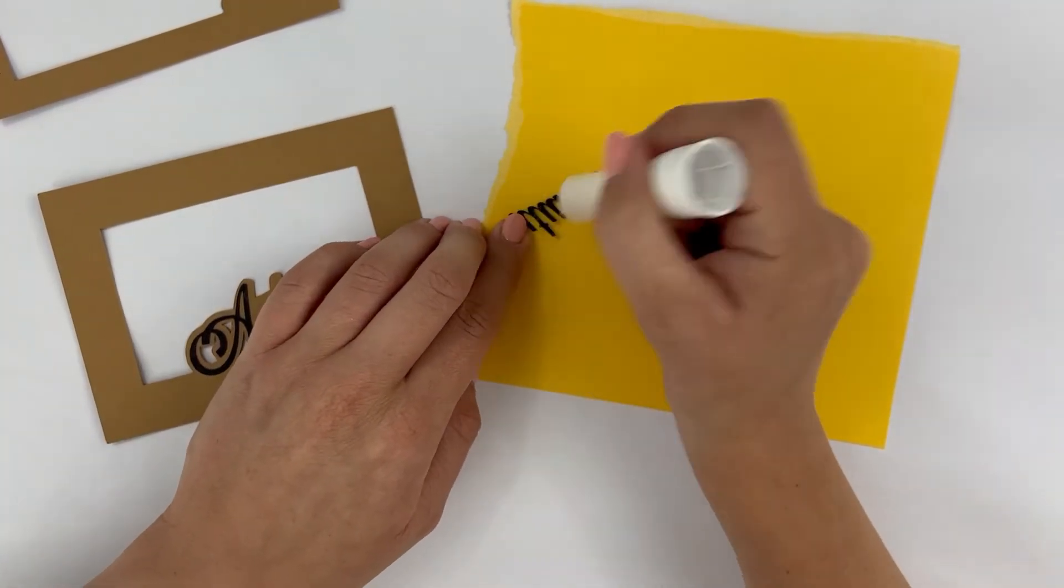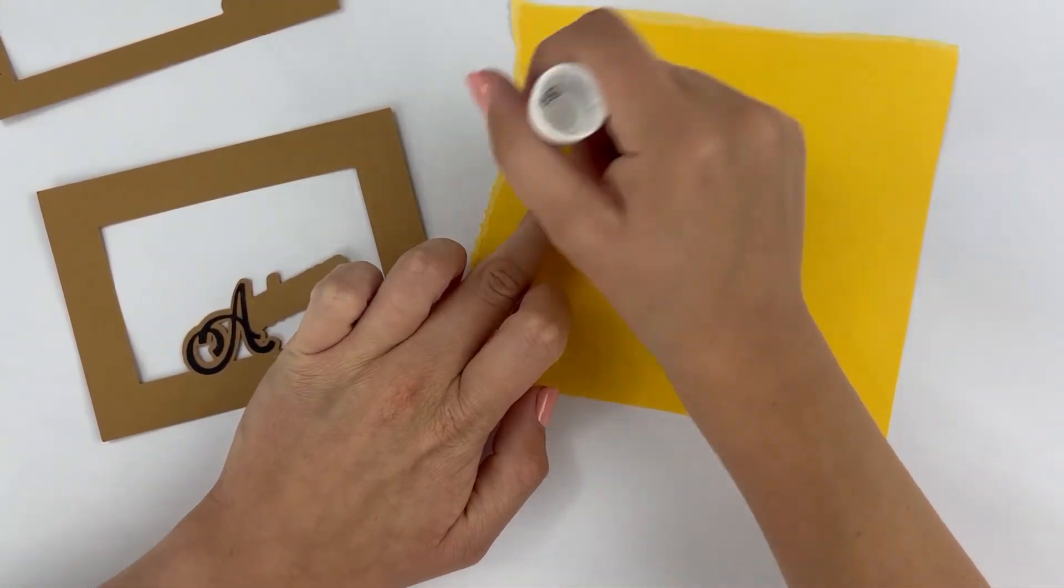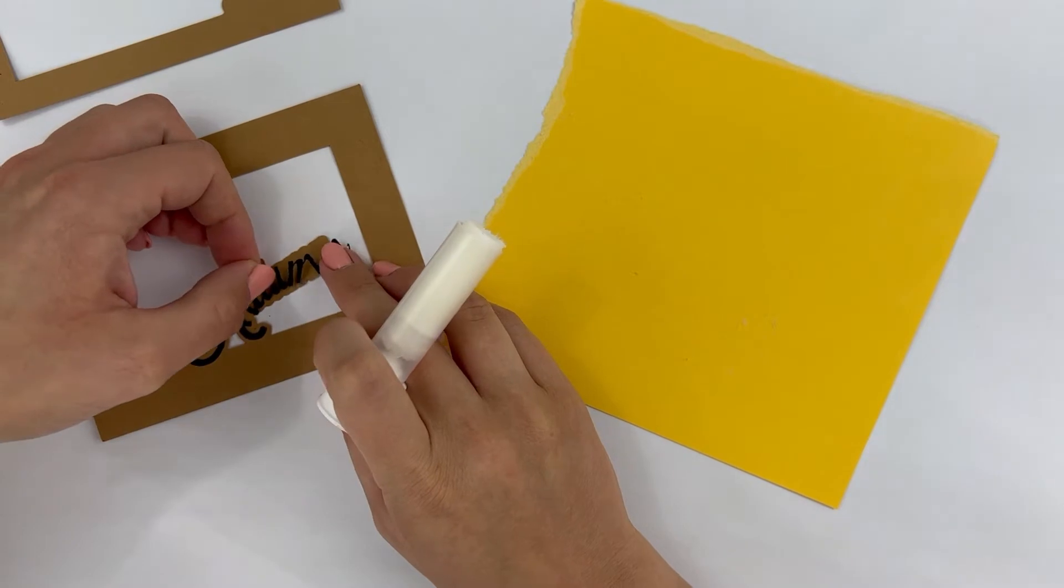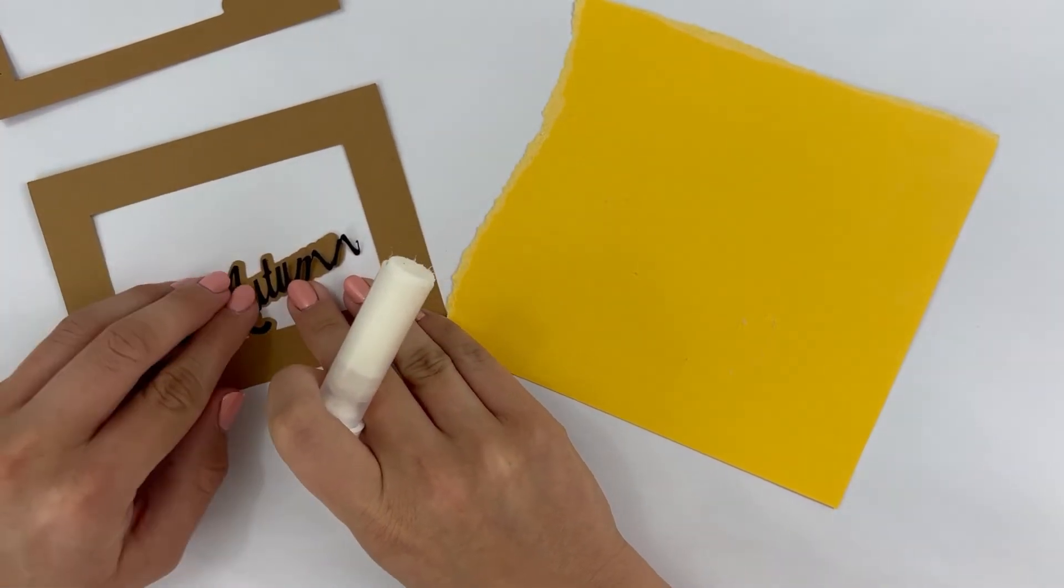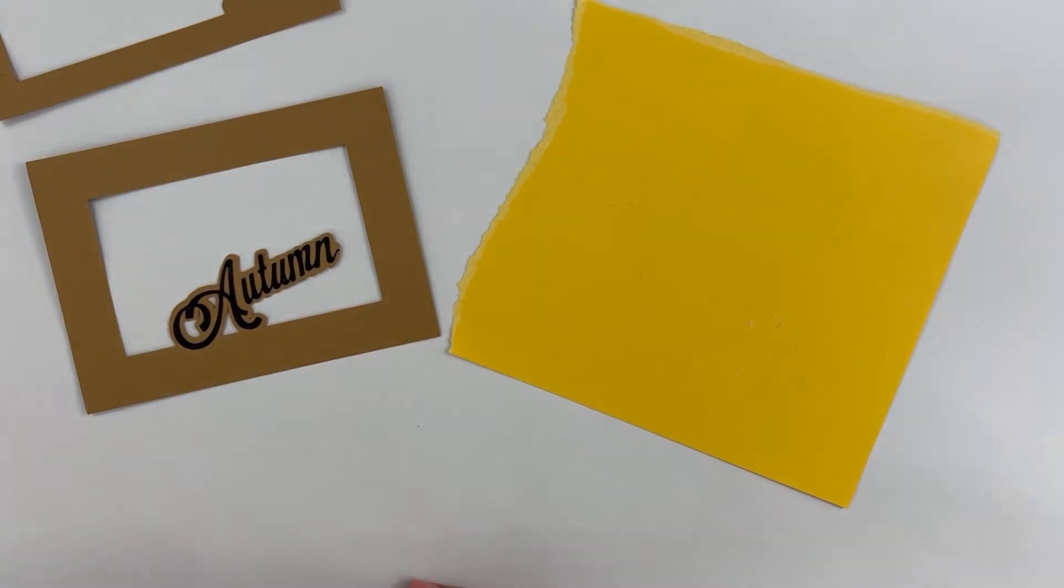These pieces tend to be very delicate. If you are confused where the letters or leaves line up with the backing piece, try reopening the original file on your computer so that you can use it as a reference. This always helps me get everything in the perfect place.